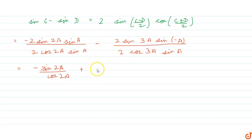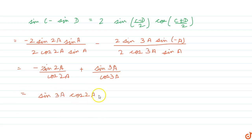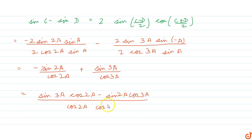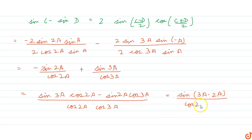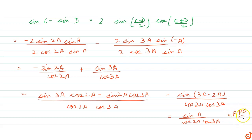Taking the common denominator, we get sin3a times cos2a minus sin2a times cos3a, all divided by cos2a times cos3a. The numerator matches the expansion of sin(3a - 2a), giving us sin3a divided by cos2a times cos3a, which equals the right hand side. Hence the question is proved.